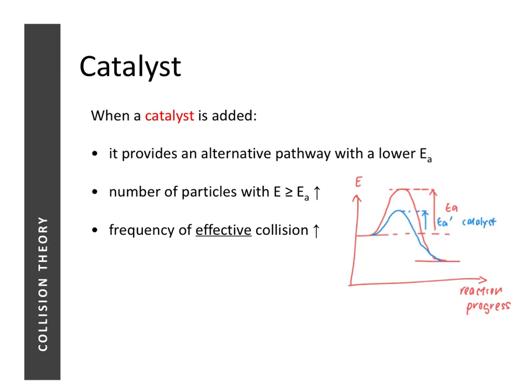We have now looked at the five different factors that can affect the speed of reaction, how they affect the speed of reaction, and using collision theory we have learned how to explain why each factor affects the speed of reaction.